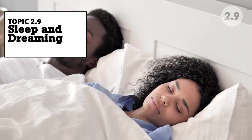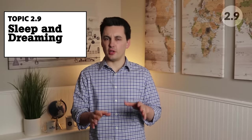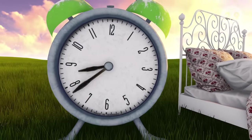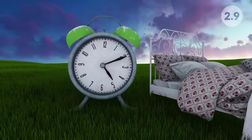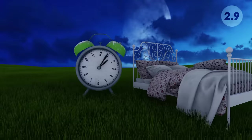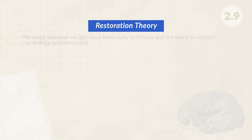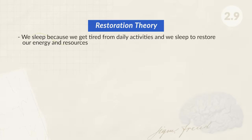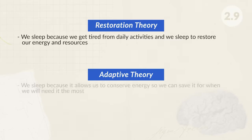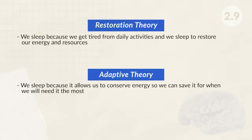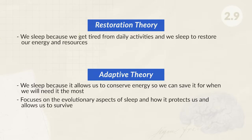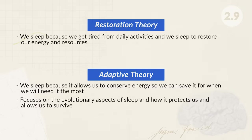We've made it to the last section of Unit 2, which is all about sleep and dreaming. In talking about sleep we have to start with your circadian rhythm — your biological clock. It involves changing your blood pressure, internal temperature, and hormones, and regulates your sleep-wake cycle. We can look at why we sleep in a couple of different ways. The restoration theory believes we sleep because we get tired from daily activities and sleep to restore our energy and resources. The adaptive theory believes we sleep to conserve energy so we can save it for when we need it most — focusing on evolutionary aspects of sleep and how it protects us and allows us to survive. The information processing theory focuses on how sleep allows us to restore and build memories; if we do not get enough sleep we'll struggle with new information learned that day.